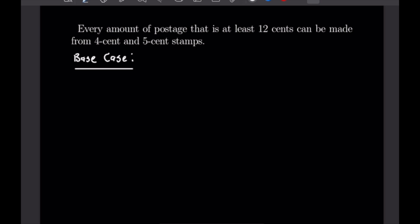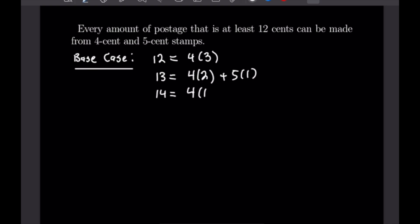The first example says every amount of postage that is at least 15 cents can be made from 4-cent and 5-cent stamps. Since we're starting out with at least 12 cents, our first case is 12 = 4×3. Then 13 = 4×2 + 5×1. Then 14 = 4×1 + 5×2. And our last base case is 15 = 5×3. Going on to 16 would be redundant, as we'd just have 4×4 and repeat this loop.